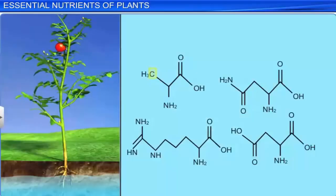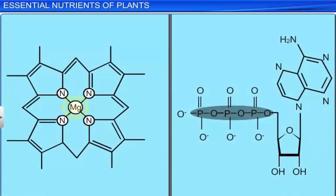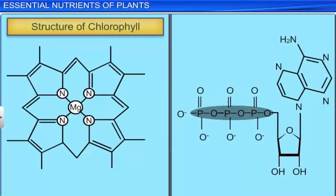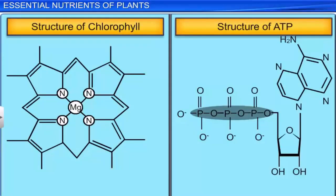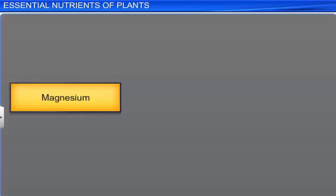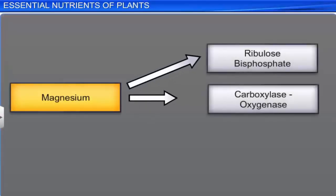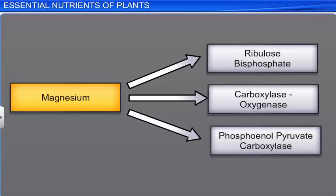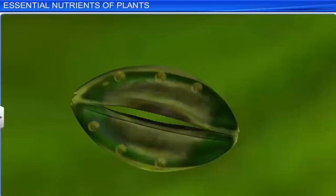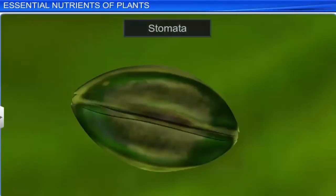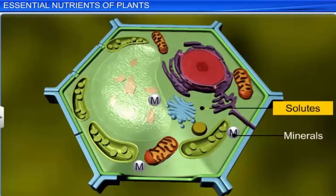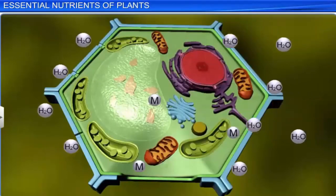Elements like carbon, hydrogen, oxygen, and nitrogen are the components of biomolecules that are essential to a plant. Elements like magnesium and phosphorus are the components of energy releasing chemical compounds like chlorophyll and ATP. Magnesium is an activator for enzymes like ribulose-biphosphate-carboxylase-oxygenase and phosphoenol-pyruvate-carboxylase. Potassium is responsible for the opening and closing of the stomata. Minerals as solutes play an important role in maintaining the water potential of a cell.